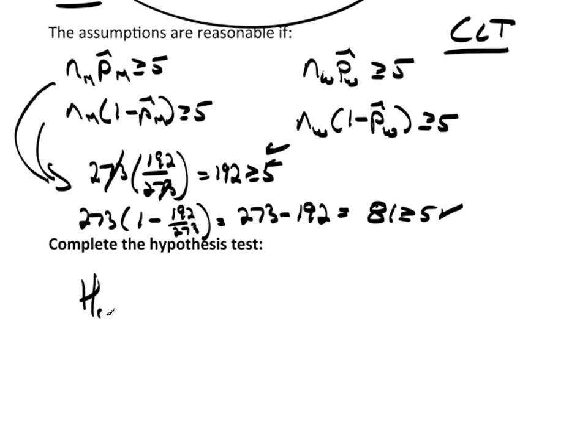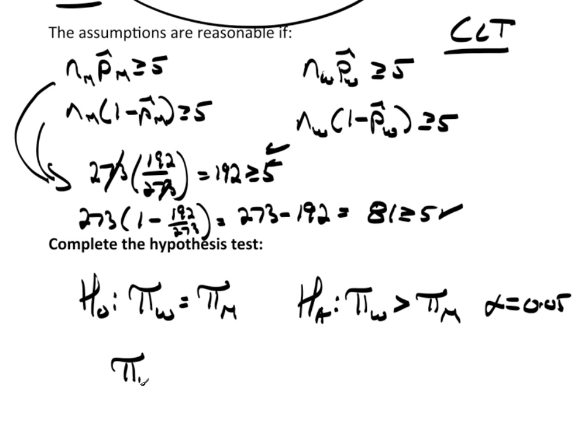The null hypothesis is going to be that pi of the women is equal to pi, the proportion of men. The alternative hypothesis is that pi of the women, the proportion of women, is greater than the proportion of men. Now, I'm going to let alpha equal 0.05. Now, I'm going to rewrite this just as I did with the means. This is equivalent to saying that the proportion of women minus the proportion of men is equal to 0. This is the formula that's in TC stats, but these are equivalent. And this is equivalent to saying the proportion of women minus the proportion of men is greater than 0.